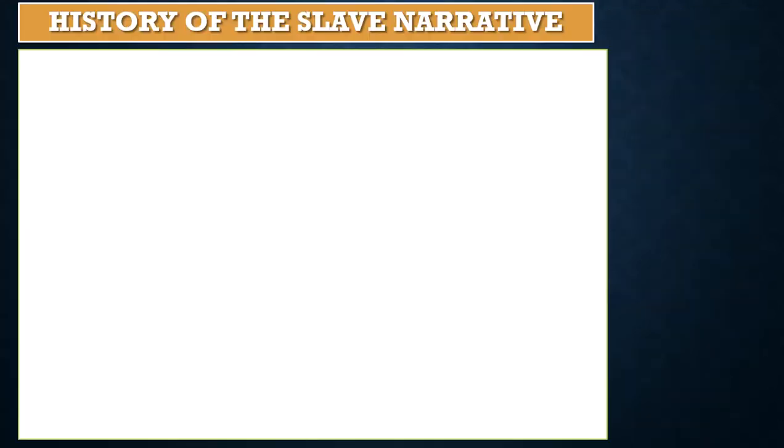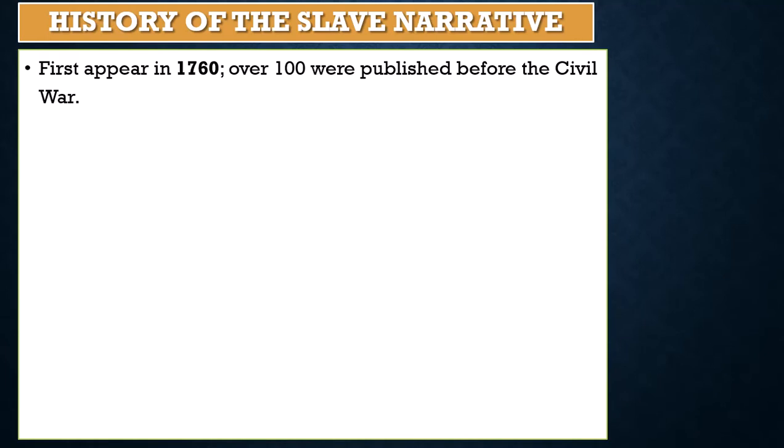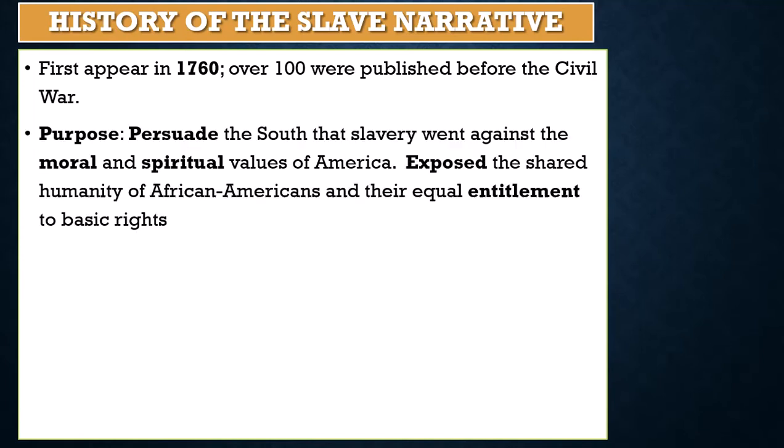The history of the slave narrative. These first started to appear in about 1760. About 100 of them were published before the Civil War, some shorter in pamphlets and some longer books like the one we are looking at. The purpose was to persuade the South that slavery went against the moral and spiritual values of America. They exposed the shared humanity of African Americans and their equal entitlement to basic rights.